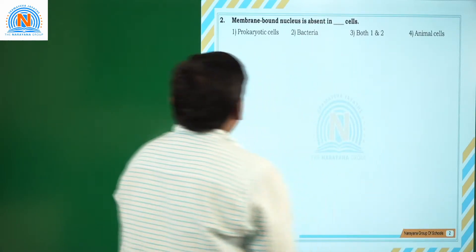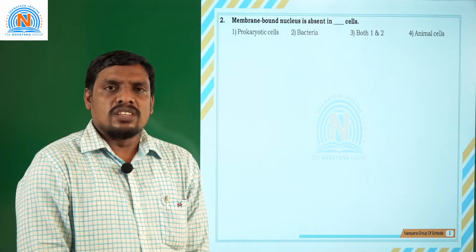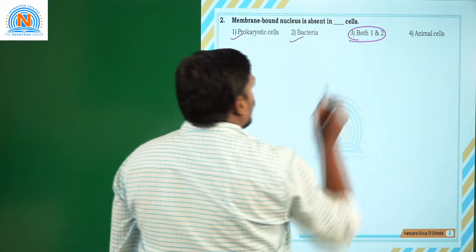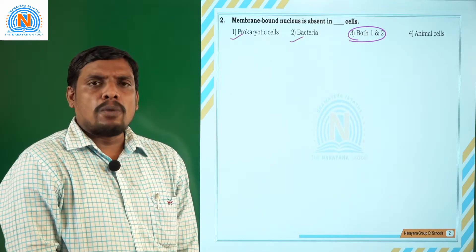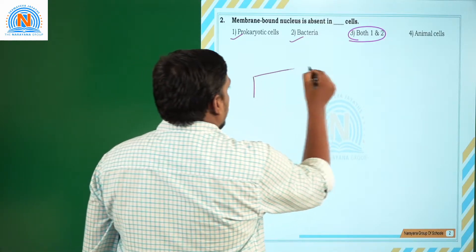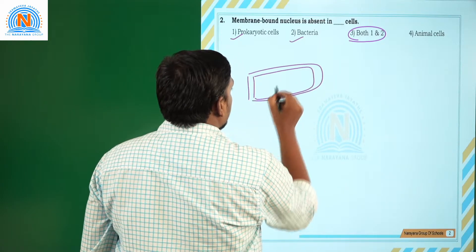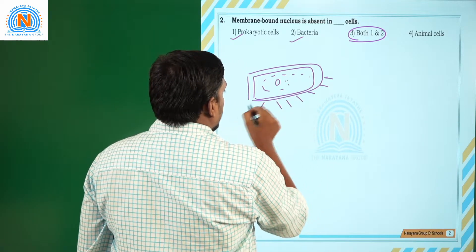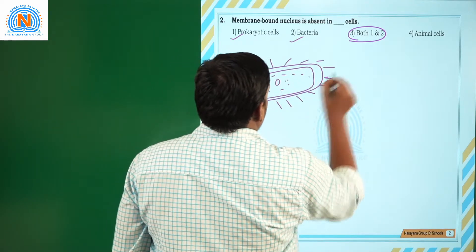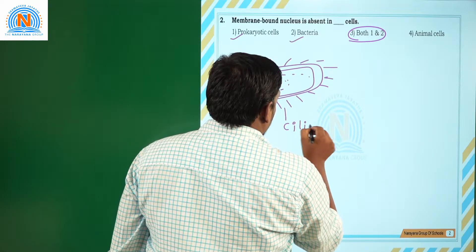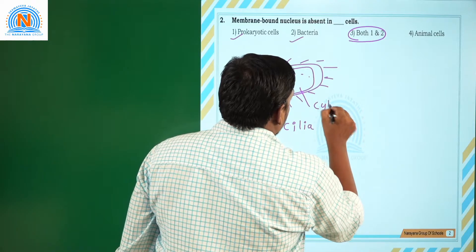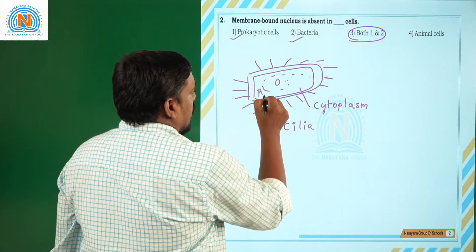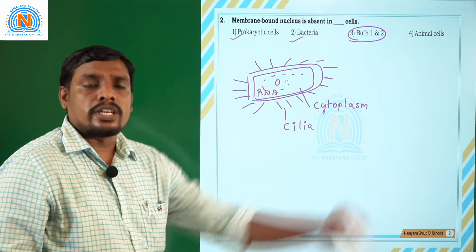Second question: membrane-bound nucleus is absent in which cells? The prokaryotic cells — bacteria — do not have a membrane-bound nucleus. If you take a bacteria, it is surrounded by hair-like structures called cilia, and there is a fluid inside called cytoplasm. The genetic material, like RNA, is distributed on the surface of the cytoplasm.